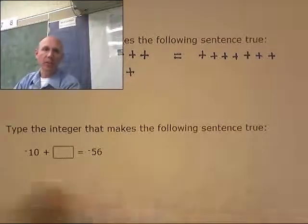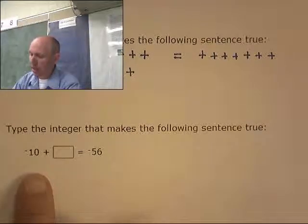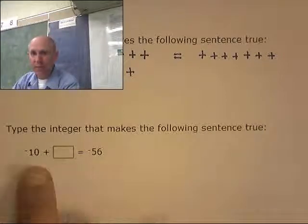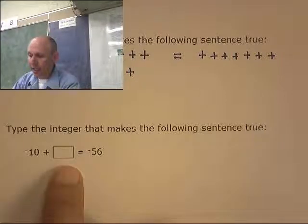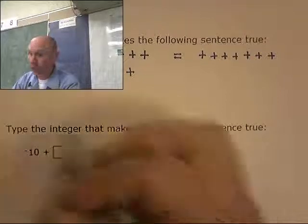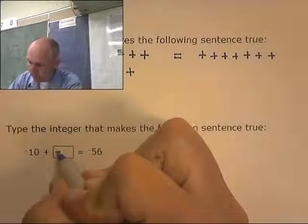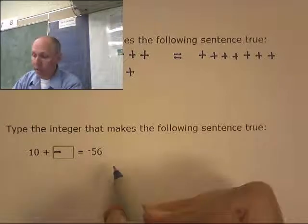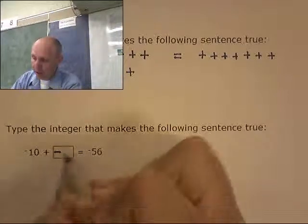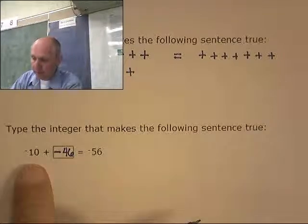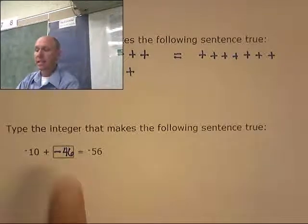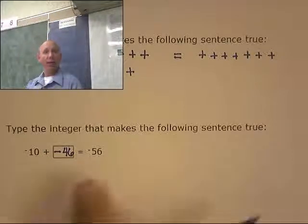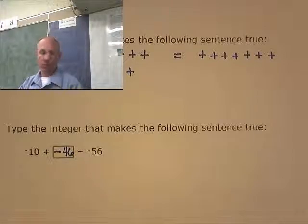Now this next one I'm not going to do by writing out positives and negatives — I'm going to think it through. I have negative 10 plus something equals negative 56. Well, I have a bunch of negatives. I'm going to need some more negatives to get to negative 56, so I know this is going to be negative. How about negative 46? Negative 10 plus negative 46 — how many do I have total? I have 56 negatives. All right.